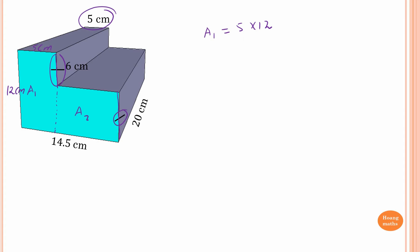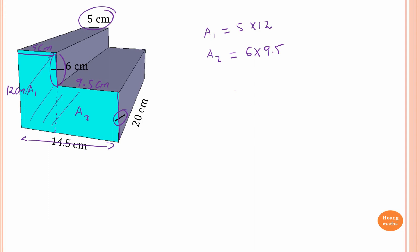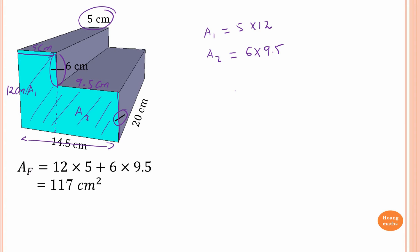To find Area 2, we know the full height is 15.5 centimeters and the length of the top section is 5, so the remaining length is 15.5 minus 5 equals 9.5 centimeters. Therefore Area 2 is 6 times 9.5. The total area of the front is 12 times 5 plus 6 times 9.5, which gives 117 square centimeters.